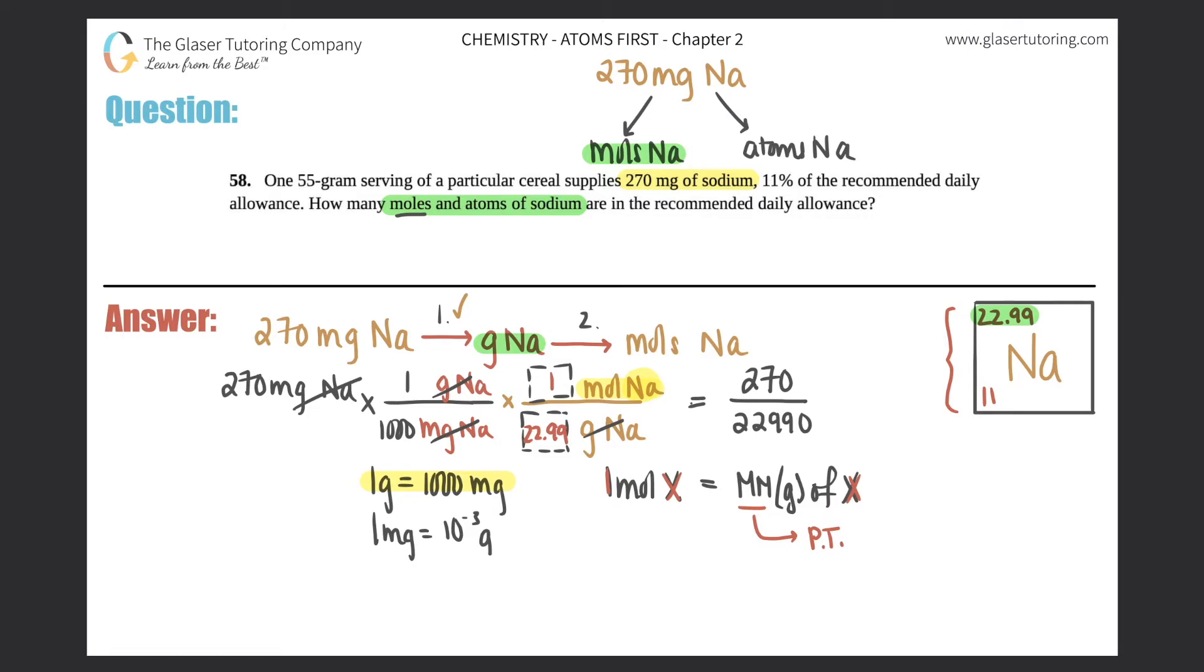And then you just divide the two of them. So if I do that, 270 divided by that answer. And this has two sig figs in it technically. The zero at the end doesn't count because there's no decimal. So my answer should have two sig figs. So this should be 0.012 moles of sodium. Box that answer off. That's how many moles of sodium are in this serving.